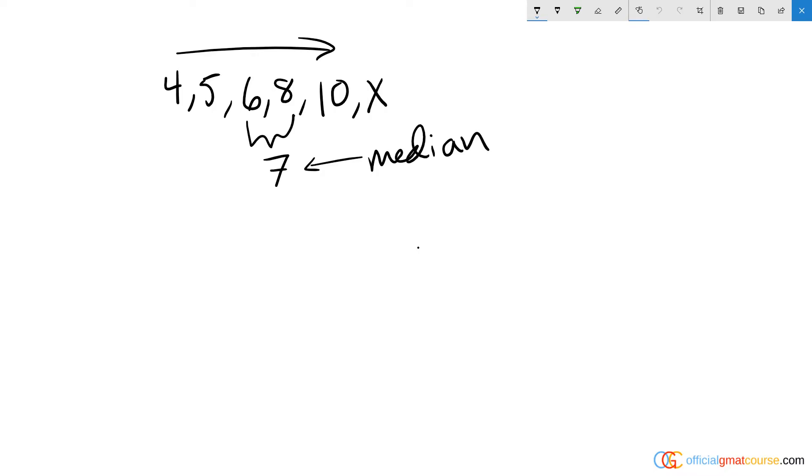All right, so we've got a question that's asking about median as well as average. Whenever we have a question focused on average, I'm always thinking about the total instead of trying to manipulate the average, because what is an average? An average is simply a sum total over the number of items that we added up.